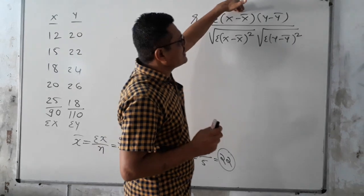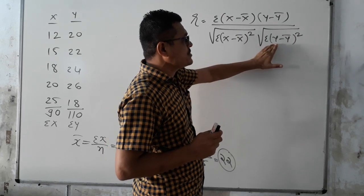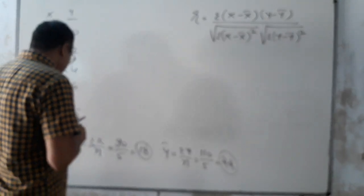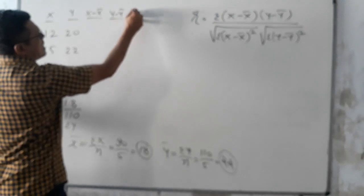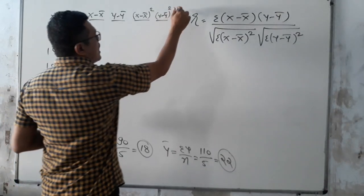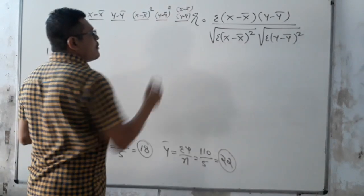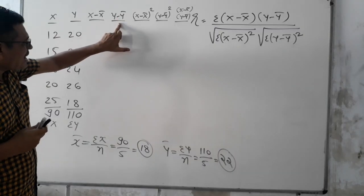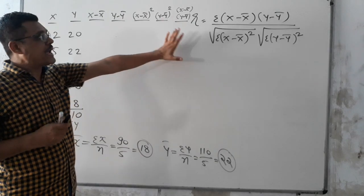R = Σ(X − X̄)(Y − Ȳ) upon under root Σ(X − X̄)² multiplied by under root Σ(Y − Ȳ)². So we are preparing five columns: column 1 is (X − X̄), column 2 is (Y − Ȳ), column 3 is (X − X̄)², column 4 is (Y − Ȳ)², and column 5 is (X − X̄)(Y − Ȳ) — the multiplication of those two columns.